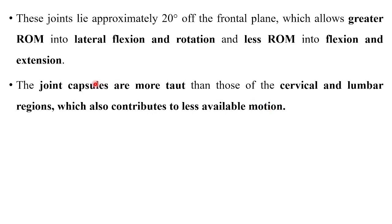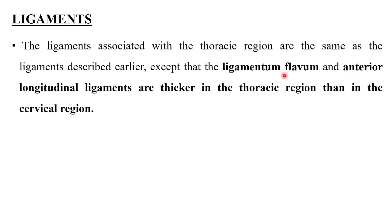The joint capsules are more taut than those of the cervical and lumbar regions, which also contributes to lesser available motions. Along with the ligaments, the joint capsules provide primary restrictions to motions. Coming to the ligaments, the ligaments of the thoracic region are the same as described earlier, except that the ligamentum flavum and anterior longitudinal ligament are thicker in the thoracic region than in the cervical region.